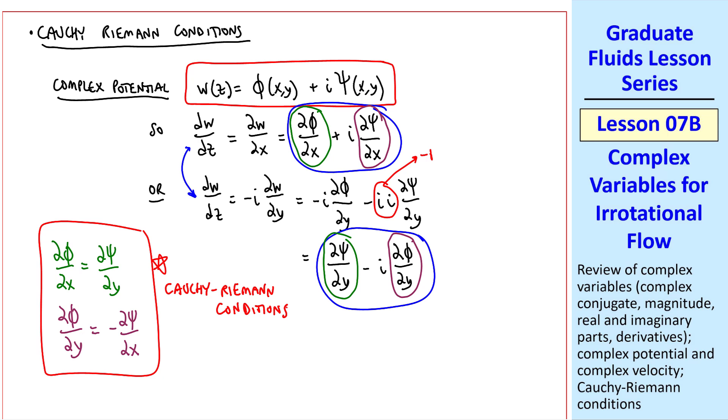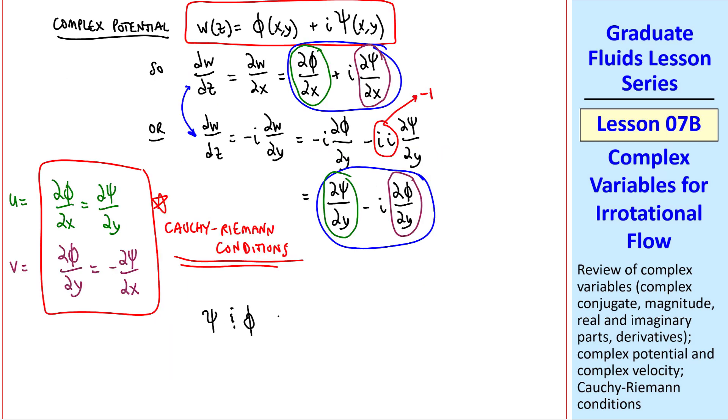These conditions are called the Cauchy-Riemann conditions, as I've already mentioned. You may also recall that this is u and this is v, which again shows how psi and phi are related to each other. In fact, psi and phi are called harmonic conjugates of each other. They are related through the Cauchy-Riemann conditions. And this confirms what we said about approaching the derivative from any direction.